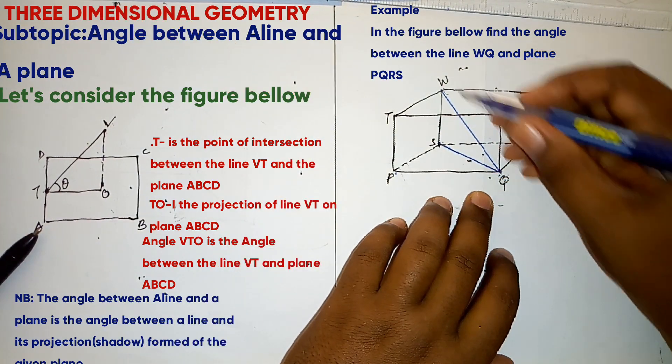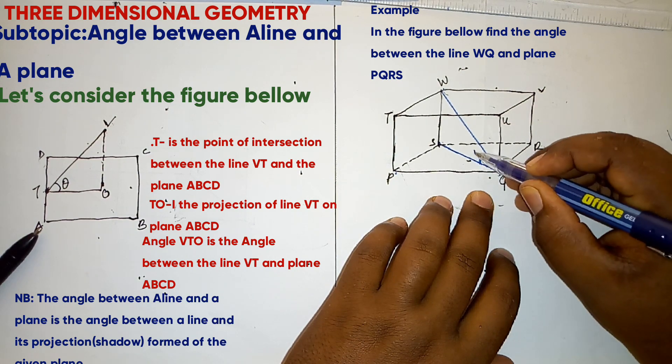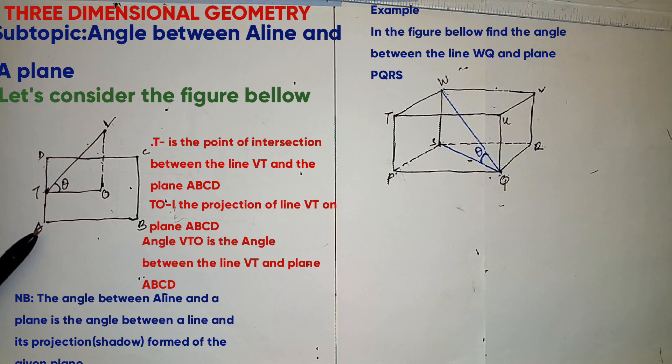Angle between the line and its projection, that is the angle required. So how can we get that angle?